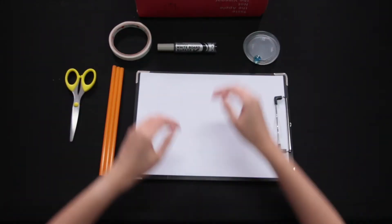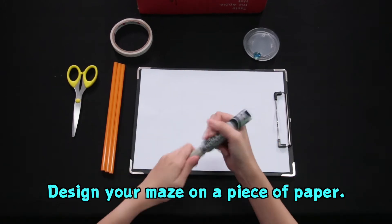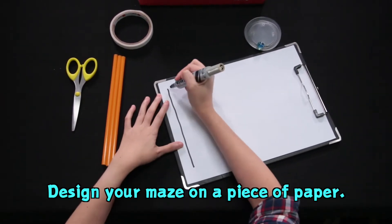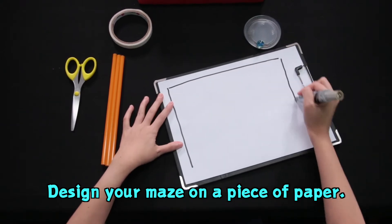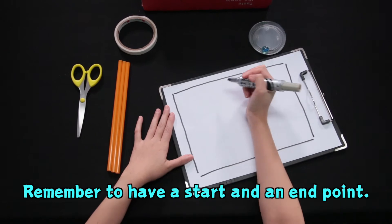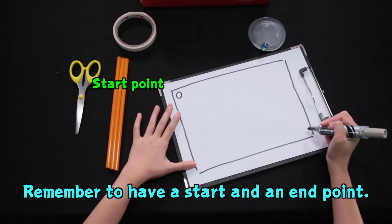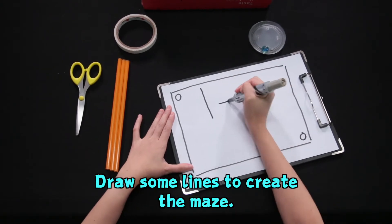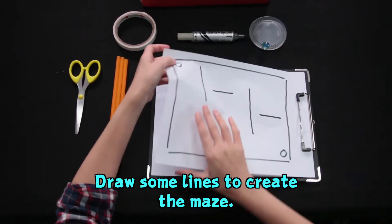So what you need to do is take a marker and design your maze on a piece of paper. Feel free to design your own special maze. Remember to have a start and also an end point. You can draw some lines over here and it will look like this.